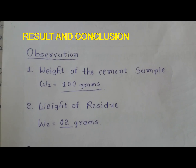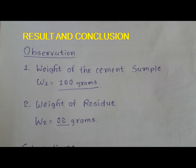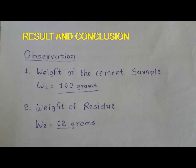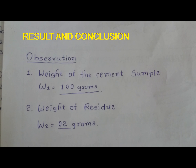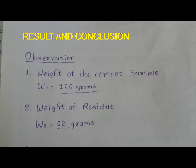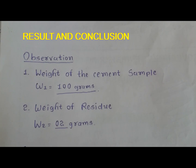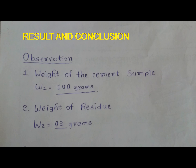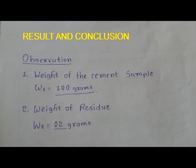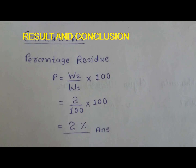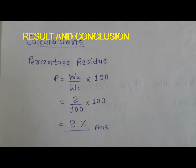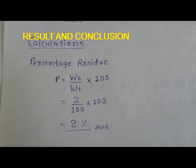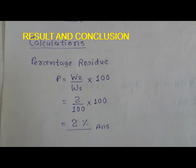Now we are going for result and conclusion. Observation: the weight of the cement sample W1 is equal to 100 gram. Weight of the residue W2 is equal to 2 gram. Calculation: percentage residue P is equal to W2 divided by W1 multiplied by 100, which is equal to 2 divided by 100 multiplied by 100.